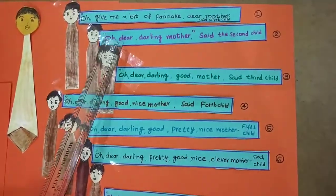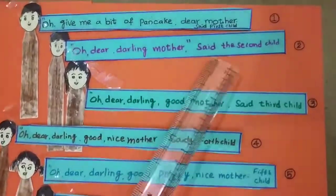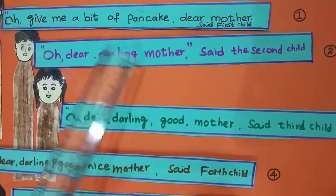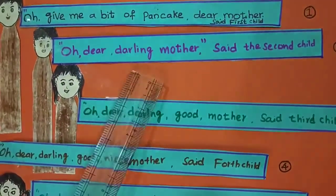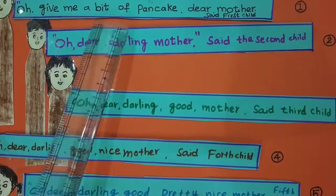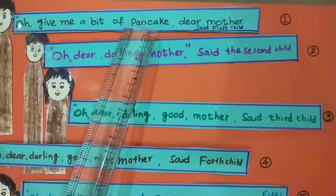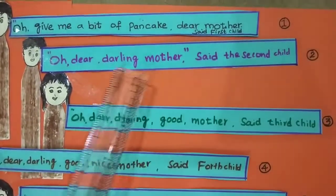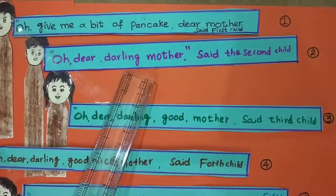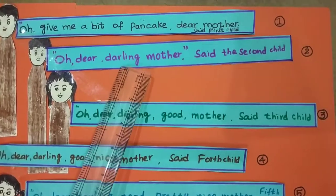The second child says: Oh, dear darling mother. There is some difference between these two dialogues. The first child says, 'Give me a bit of pancake, dear mother.' The second one says, 'Dear darling mother' — adding the word 'darling.'